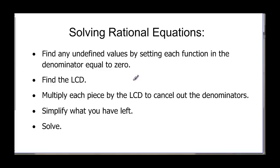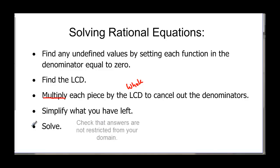Then you find the least common denominator and multiply each piece by it — you want the whole least common denominator multiplied by each term to cancel out the denominators. Then you can simplify the resulting linear or quadratic equation, solve, and check to make sure you don't have answers that are not in your domain.